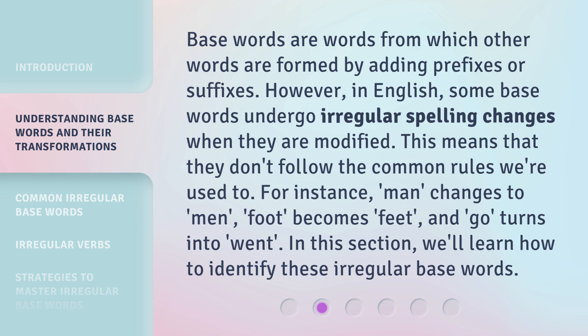Base words are words from which other words are formed by adding prefixes or suffixes. However, in English, some base words undergo irregular spelling changes when they are modified. This means that they don't follow the common rules we're used to. For instance, man changes to men, foot becomes feet, and go turns into went. In this section, we'll learn how to identify these irregular base words.